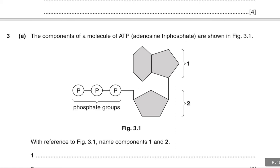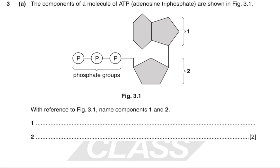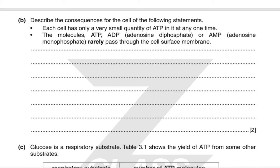The components of a molecule of ATP are shown in figure 3.1. Number 1 would be the adenine and number 2 would be the ribose. Describe the consequences for the cell of these statements: each cell has only a very small quantity of ATP at any one time, and molecules of ATP, ADP or AMP rarely pass through the cell surface membrane. Because ATP rarely passes through the membrane, it must be regenerated inside the cell — broken down for energy, then regenerated from ADP and inorganic phosphate. Both ADP and AMP must therefore be synthesized within the cell.